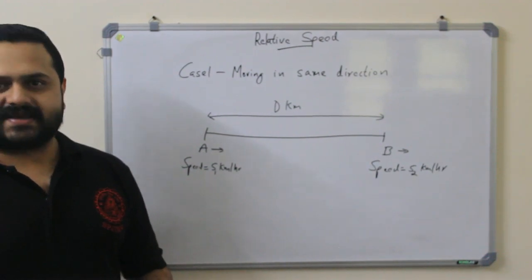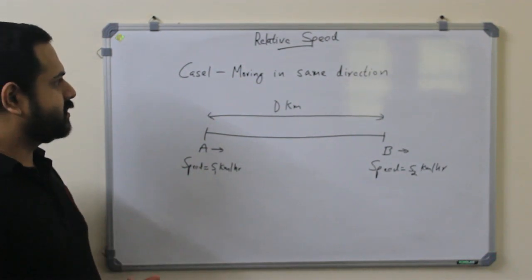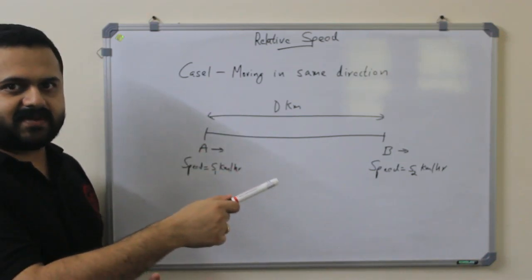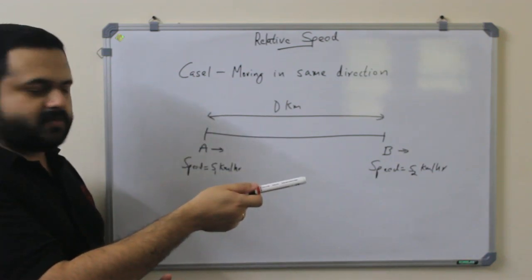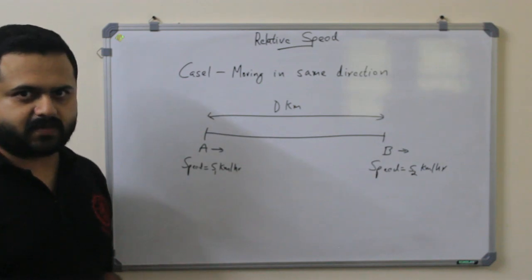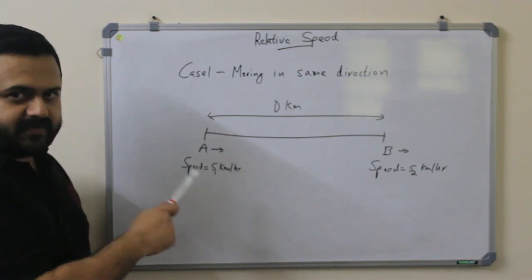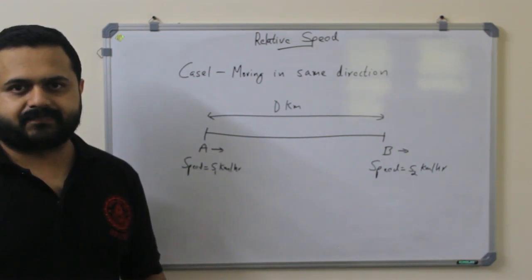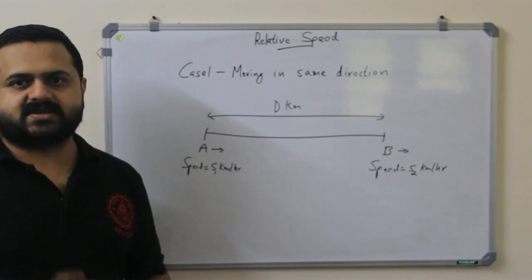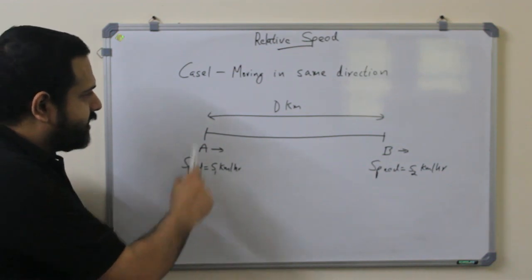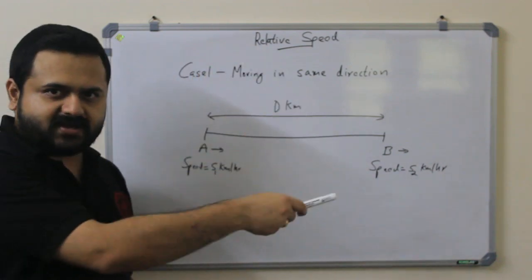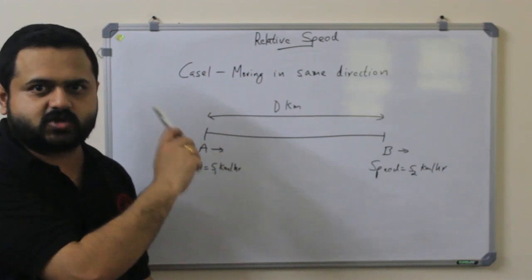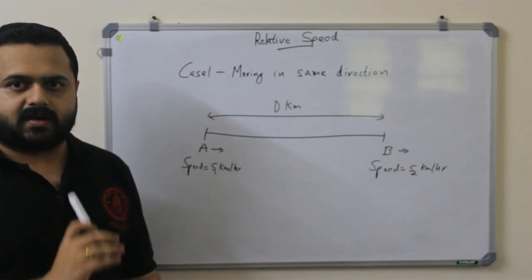Let's look at the first case: both A and B are moving in the same direction. Initially, before they start moving, A and B are separated by a distance D kilometers. A is moving with speed S1 kilometers per hour and B is moving with speed S2 kilometers per hour. The first basic concept to understand is that for A to catch B, S1 should be greater than S2 — A should be moving at a greater speed compared to B.